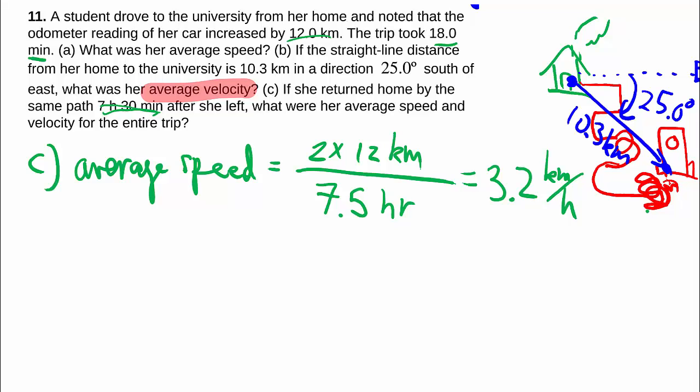For the average velocity again we need the displacement. Well where does she finish compared to where she started? She went to school and she came back so in fact she didn't go anywhere. She finished exactly where she started so displacement is zero.